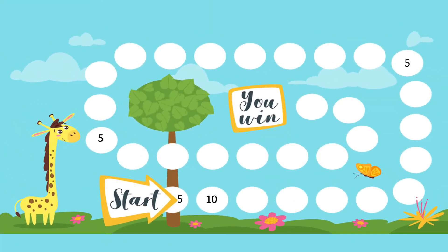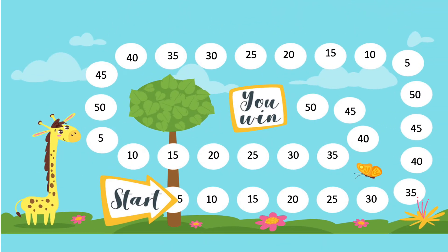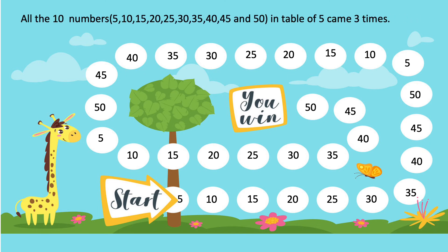Is this your favorite kind of puzzle? If it is, you can quickly do it and pause the video. The question is: help the giraffe to reach and win by writing the table of 5 in the white circles. Keep repeating the table of 5 with the hint given — you need to count how many times each number came. For example, 5 came 3 times. Write the table of 5: 5, 10, 15, 20, 25, 30, 35, 40, 45 and 50, then again 5, 10, 15 and so on. In this way, the number 5 came 3 times, the number 10 came 3 times — all 10 numbers in the table of 5 came 3 times.